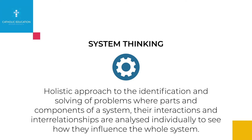So if we look at a definition of what system thinking is: system thinking is a holistic approach to identification and solving problems with the parts and the components of the system. Their interactions and interrelations are analysed individually to see how they influence the whole system. So we're looking at the whole system and how those parts interact to interpret data.